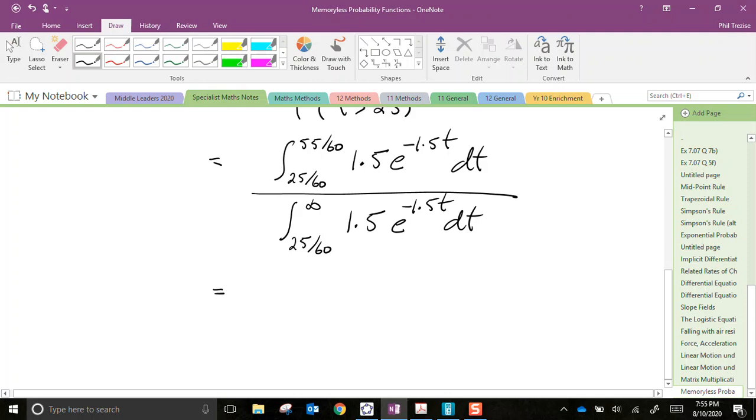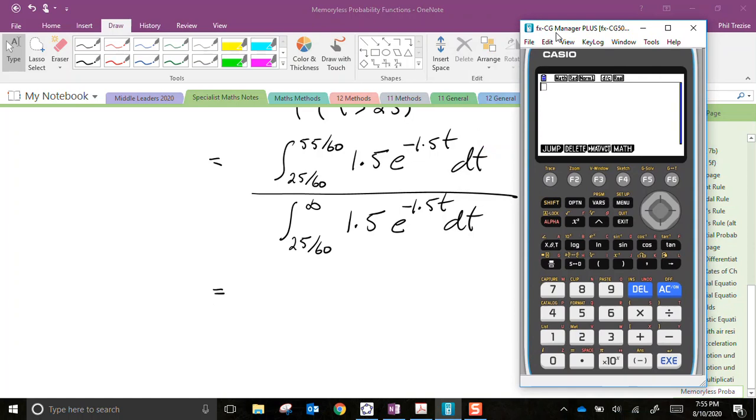Now, because this question was on a tech-active examination, of course we could do the integrations and show all the steps. But being tech-active, the intent here is that we're just going to use our calculators to perform these integrals. So we've got to type in 1.5 e to the power of negative 1.5 x. And my first one is 25/60ths of a minute.